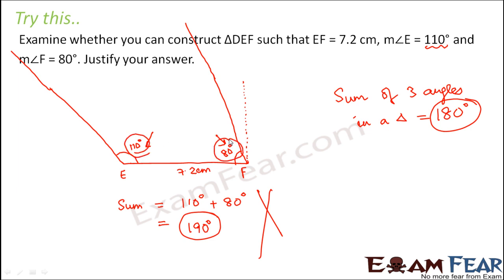We can never have a triangle with two angles equal to 110 degrees and 80 degrees respectively.